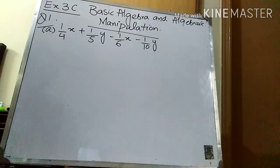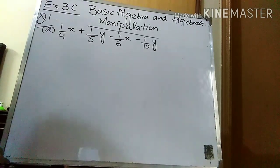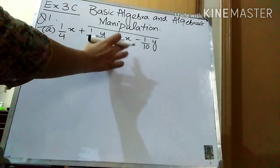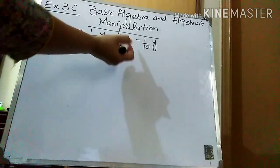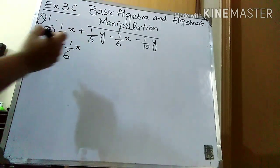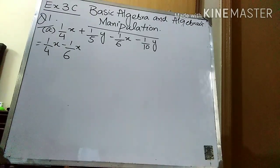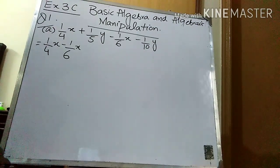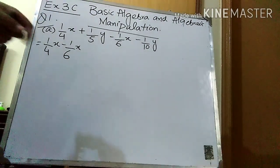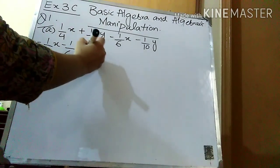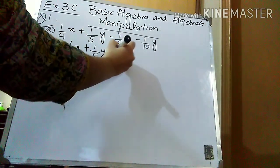The very first step is to write like terms together. This is an x term and this is an x term, so I'm going to write them together: 1/4x − 1/6x. Don't forget to write the sign of each term. Now I'm going to write the y terms together. These are also like terms: + 1/5y − 1/10y.